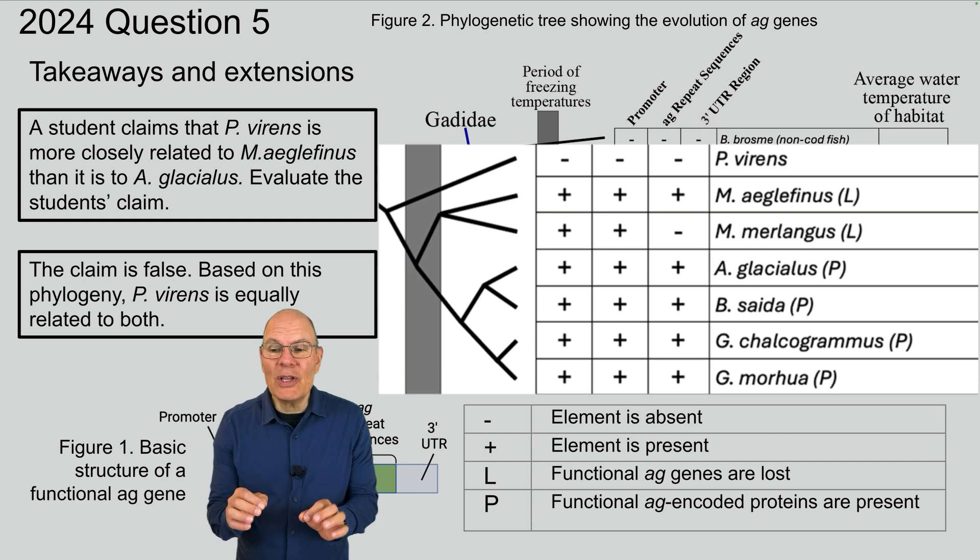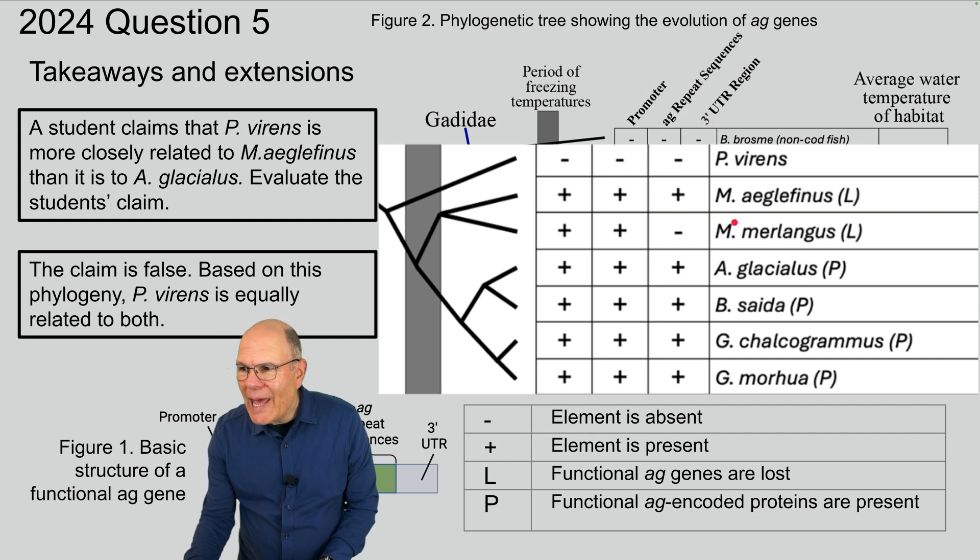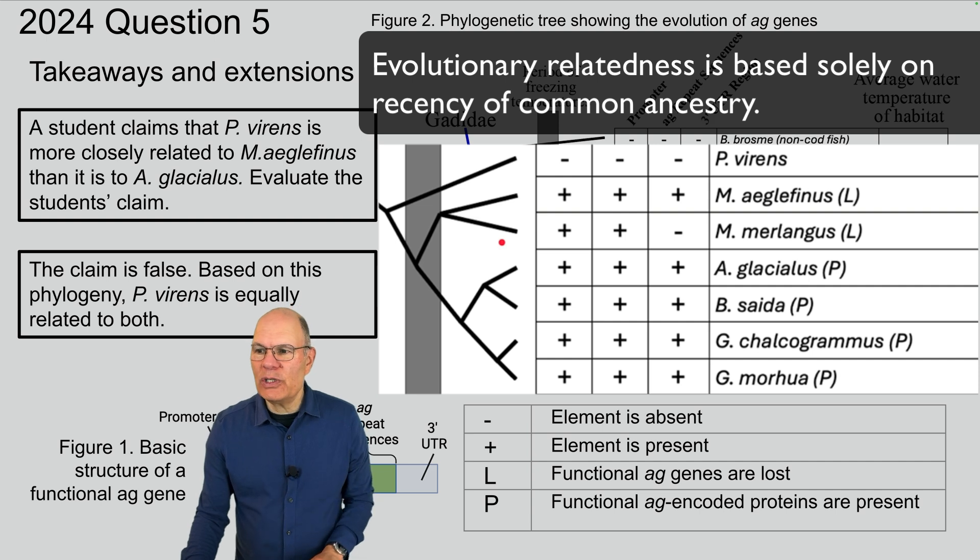Here's the answer. The claim is false. Based on this phylogeny, P. virans over here is equally related to both M. aglefinis and A. glacialis. How can that be? Because in a phylogenetic tree, the way you evaluate evolutionary closeness is by recency of common ancestry. And the common ancestor of P. virans and M. aglefinis is all the way back here, and it's the same common ancestor with A. glacialis. It's this over here. So, P. virans is equally related to both. And in this kind of tree, which is sort of a lateral tree, the vertical position has nothing to do with evolutionary relatedness. It's all about common ancestry.